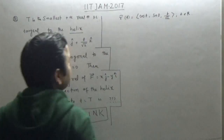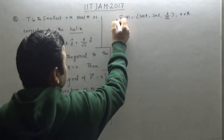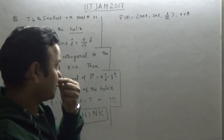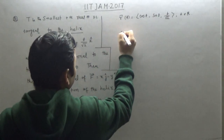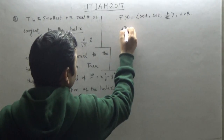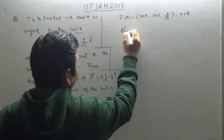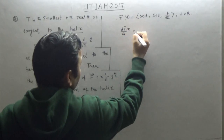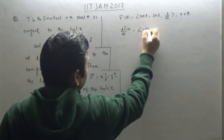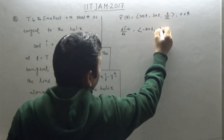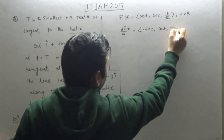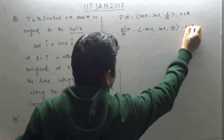To find the tangent to this curve at any point t, I just differentiate term by term. So the tangent vector is dr/dt. The derivative of cos(t) is −sin(t), the derivative of sin(t) is cos(t), and the derivative of t/√2 is 1/√2. So dr/dt = (−sin t, cos t, 1/√2).